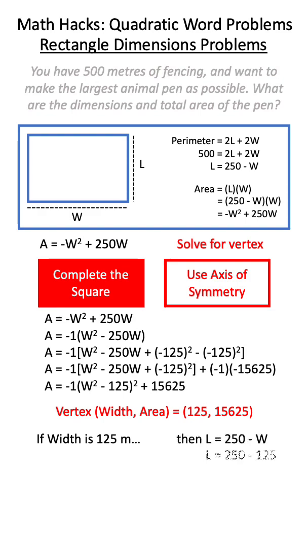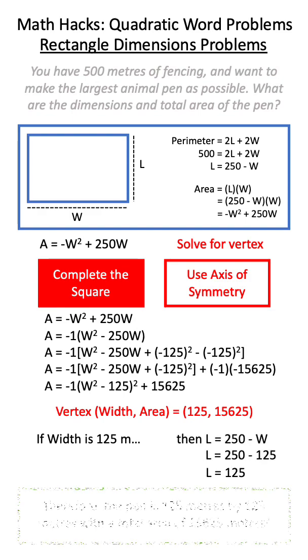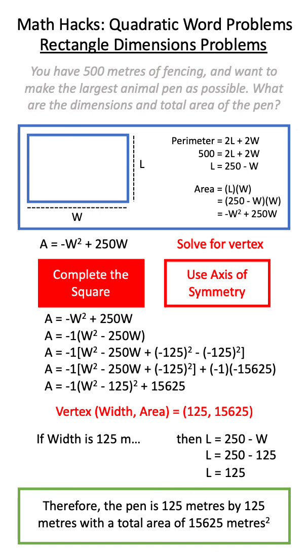This means that if our width is 125 meters, our length will also be 125 meters, and this means the overall area of the pen will be 15625 meters squared.